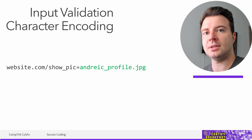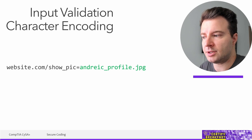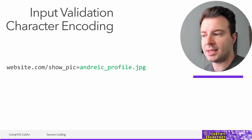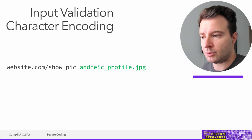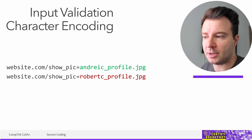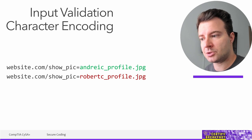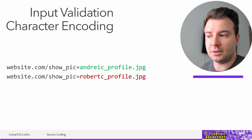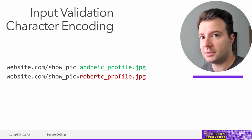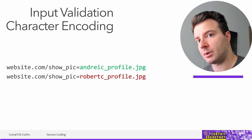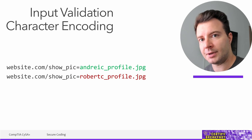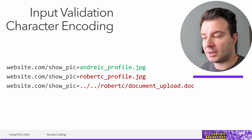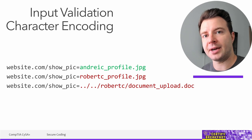Input validation can be as simple as validating HTTP requests. For example, with a website storing user profiles — if I'm logged in as Andre, I should only access my own profile picture via a specific query. An improperly coded application might allow me to generate other valid URLs, like accessing Robert's profile picture. The application should validate the request and deny me access to another user's profile information — otherwise it's broken authentication.